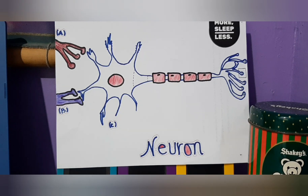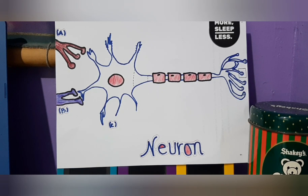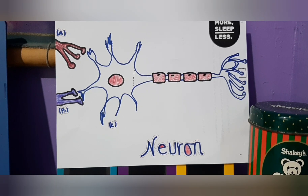In terms of the neural zones of a neuron, there are four functional zones: signal reception, signal integration, signal conduction, and signal transmission.